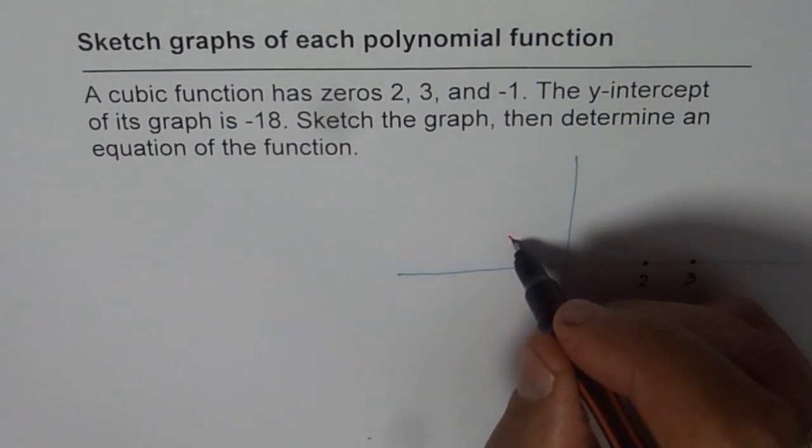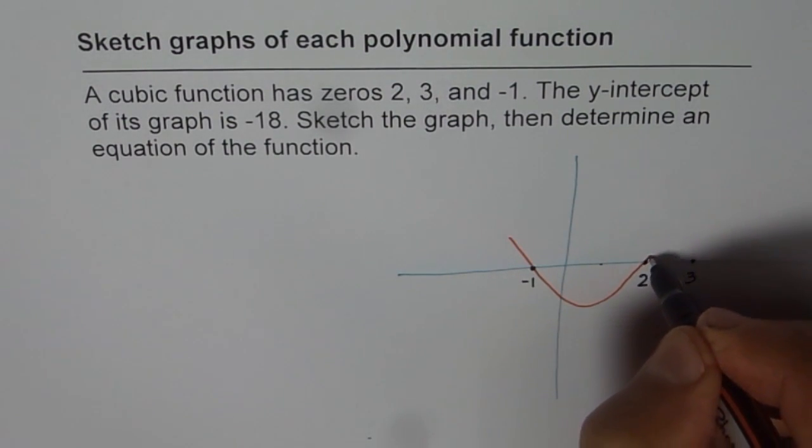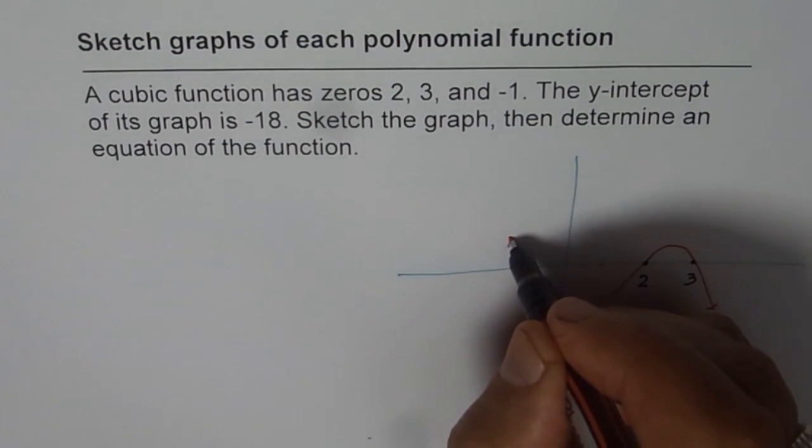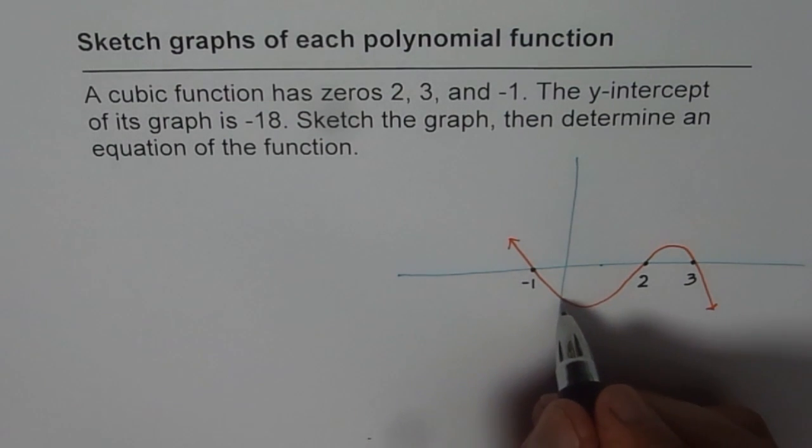So, what we will do is, we'll go like this, come down, connect the points. Smooth curve is very important for polynomials, right? No sharp corners and edges and it has to be absolutely continuous.